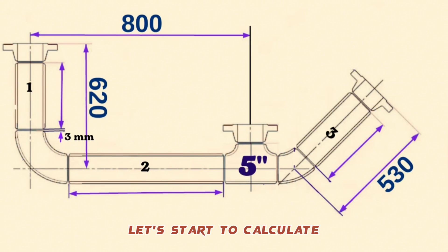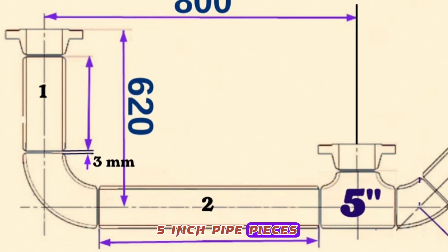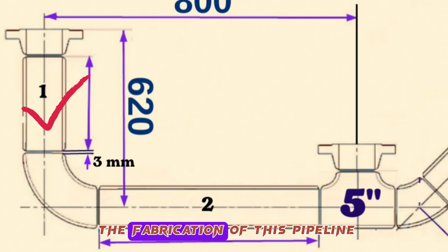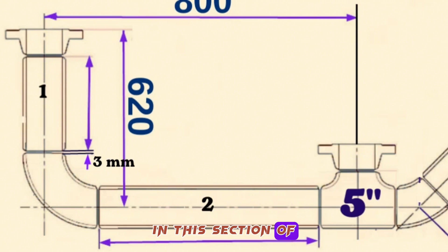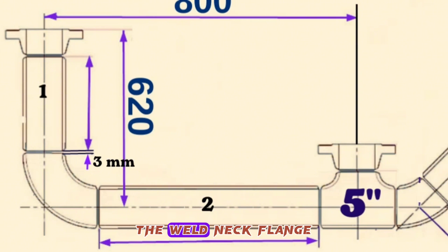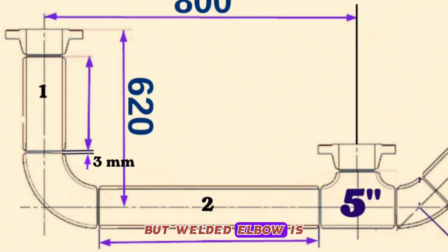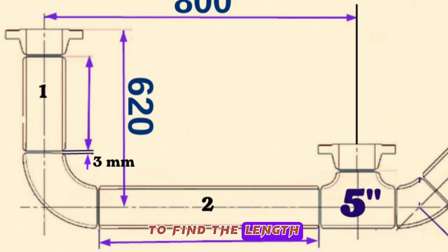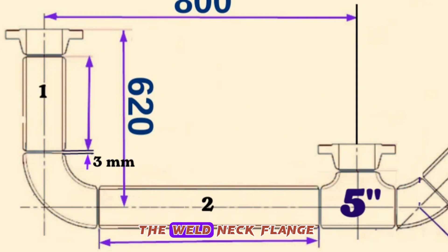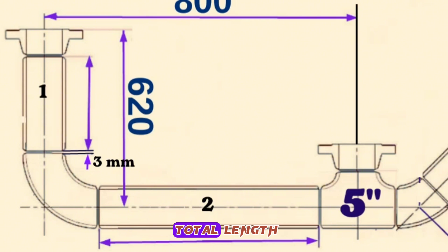Let's start to calculate the length of the 5-inch pipe piece Item 1, used in the fabrication of this pipeline. In this section of the pipeline, the total distance from the face of the weld neck flange to the center of the 90-degree butt weld elbow is 620 millimeters. To find the length of pipe piece Item 1, subtract the length of the weld neck flange and 90-degree butt weld elbow from the total length.